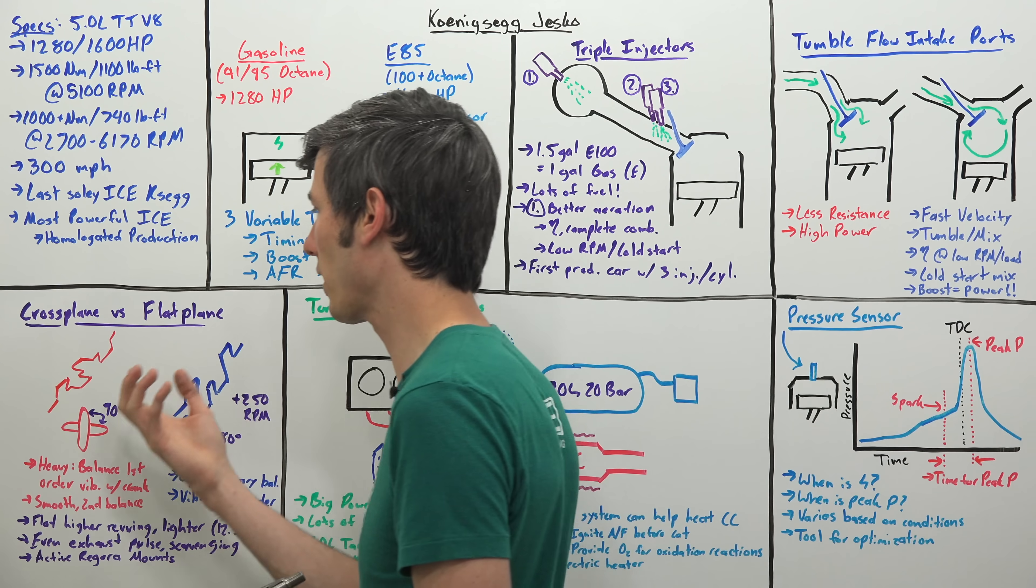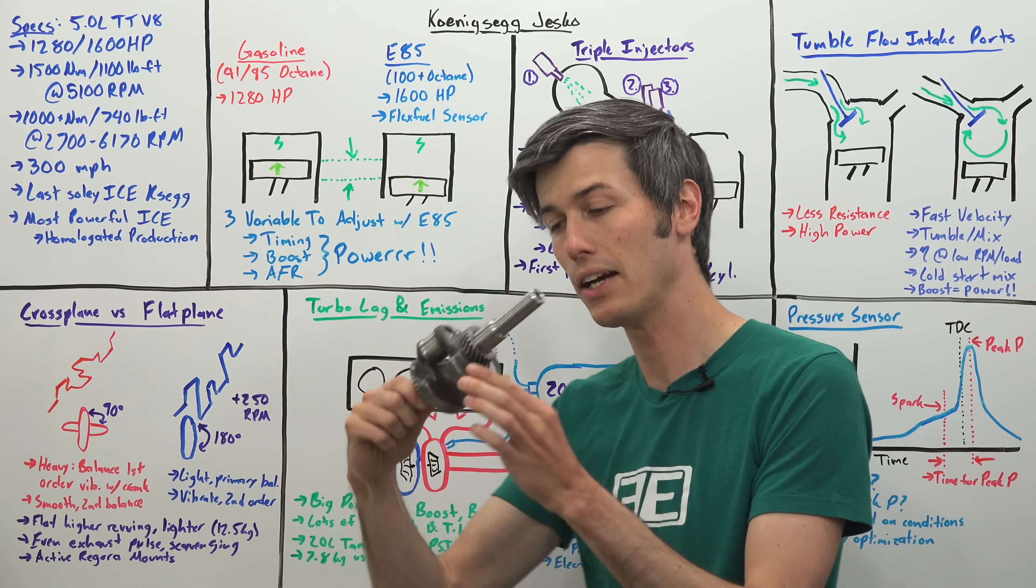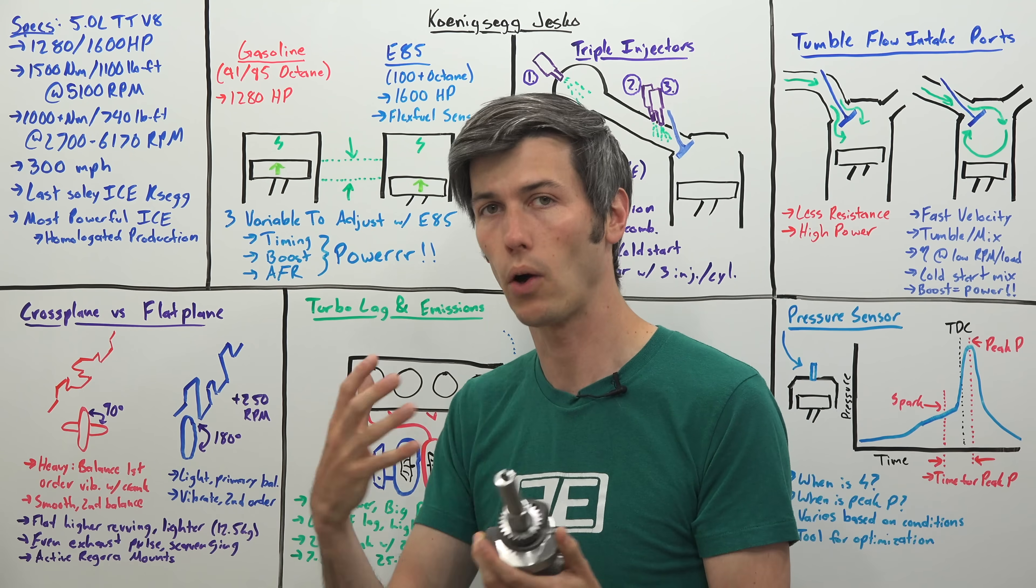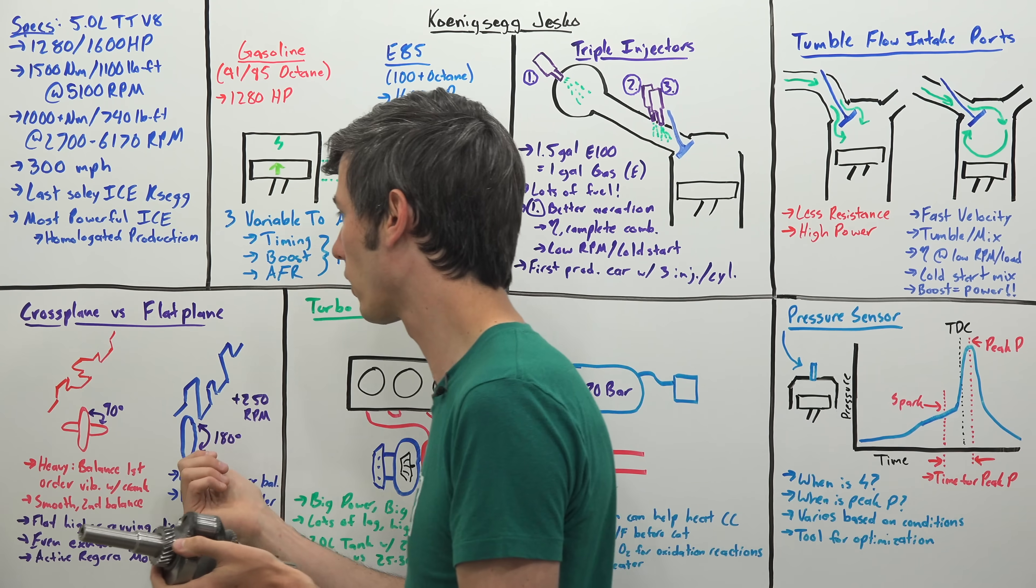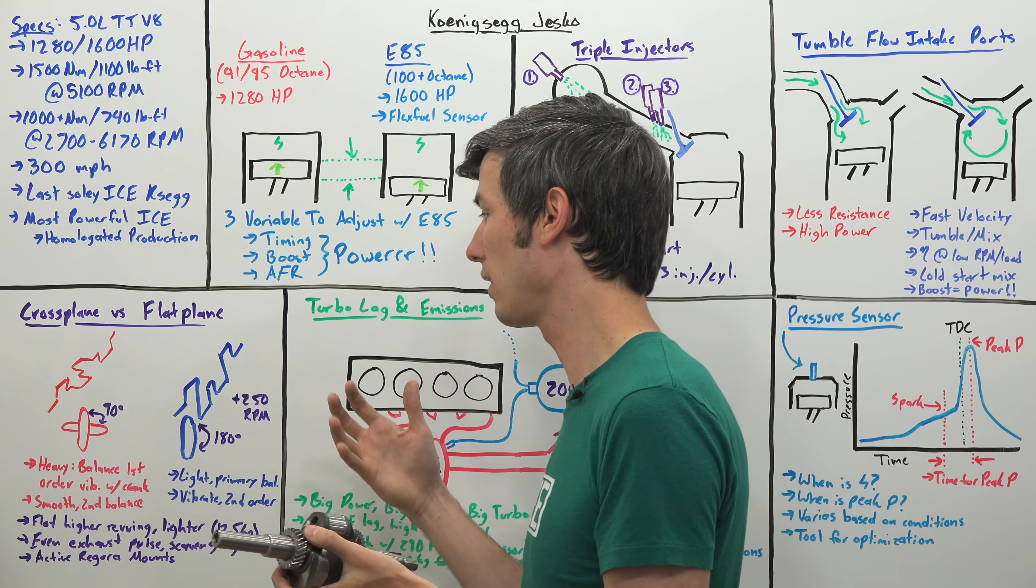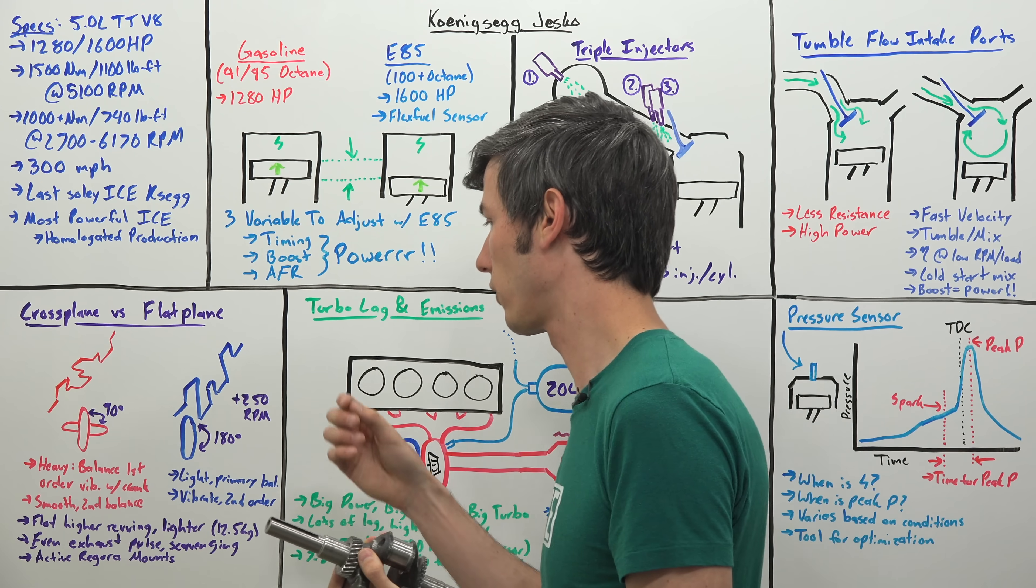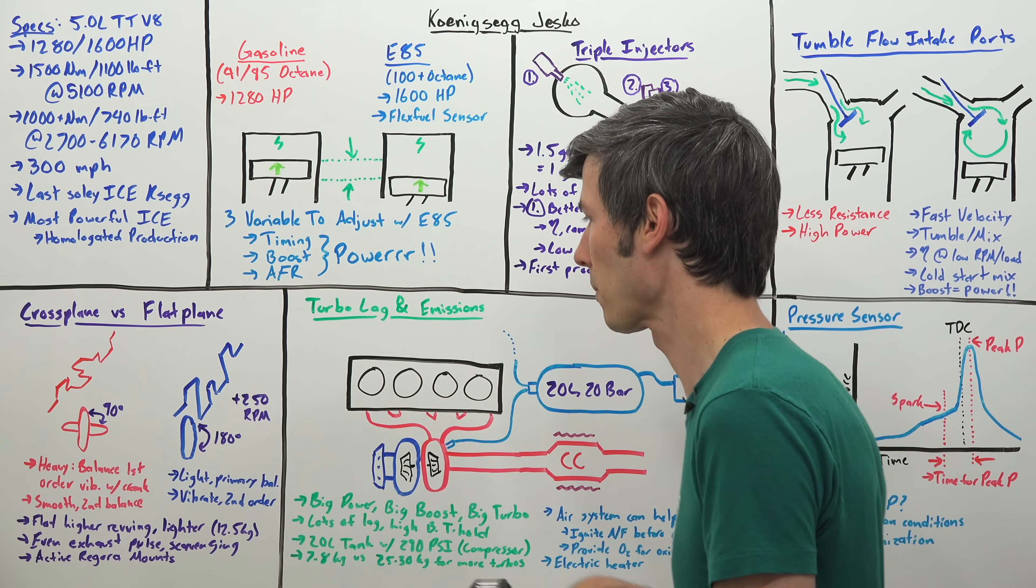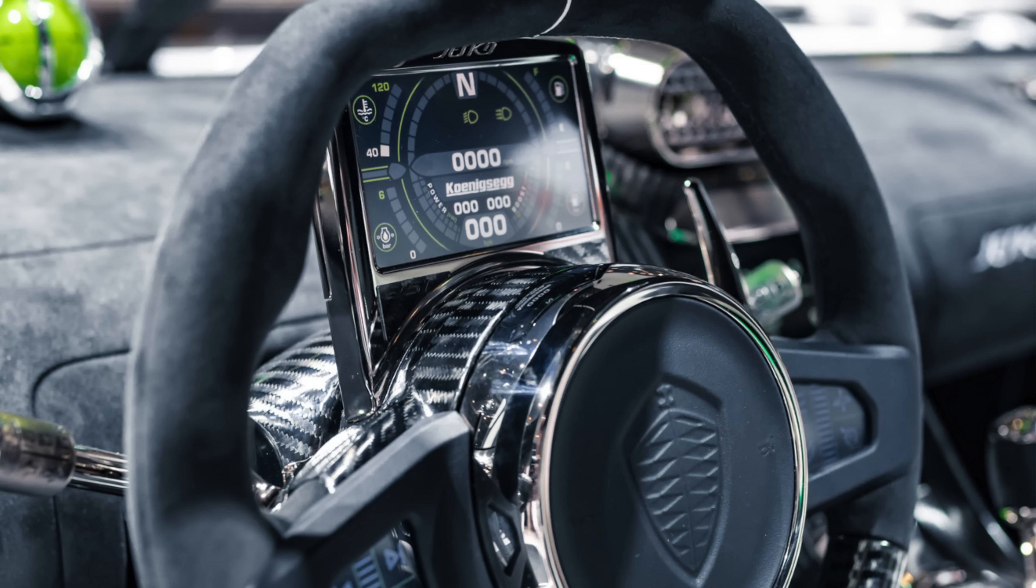There's advantages to either scenario. With the cross plane crankshaft, they're generally smoother. You can balance out the first order vibrations with heavy counterweights. The disadvantage is that it's going to have a heavy crankshaft but it's going to be smooth as a result. Versus the 180 degree, the flat plane crankshaft, the primary forces are balanced out so you have a lighter crankshaft overall, but the secondary forces are not. It does actually have more vibration as a result. You're able to get away with a lighter crankshaft and you're able to rev it up higher.